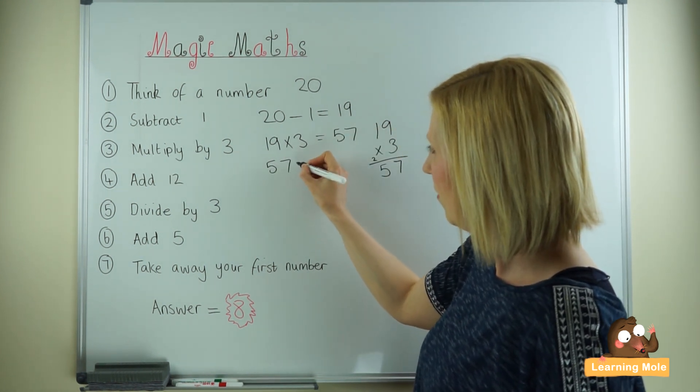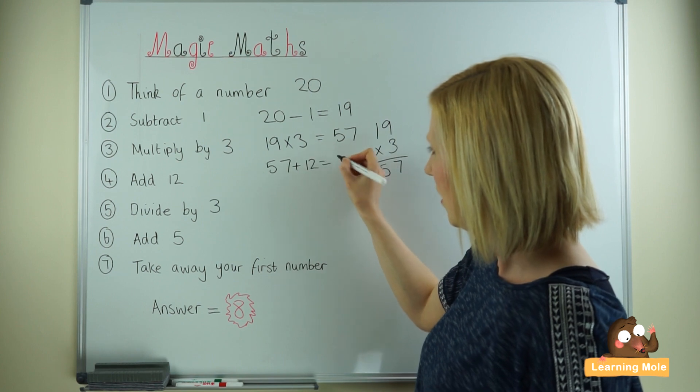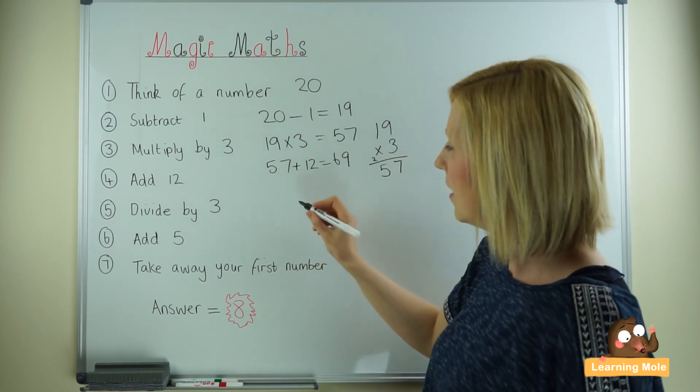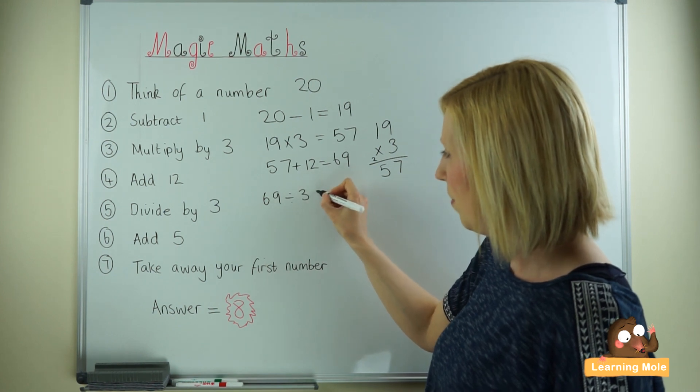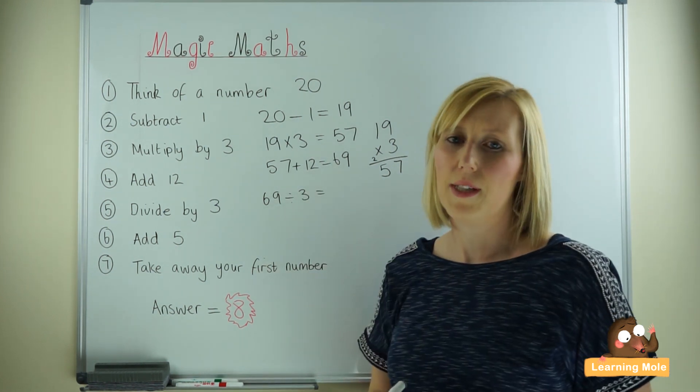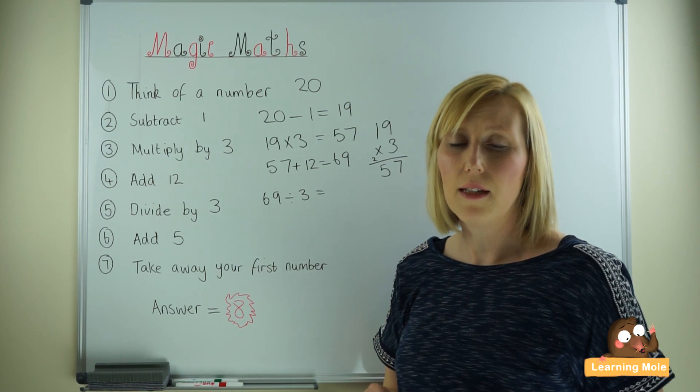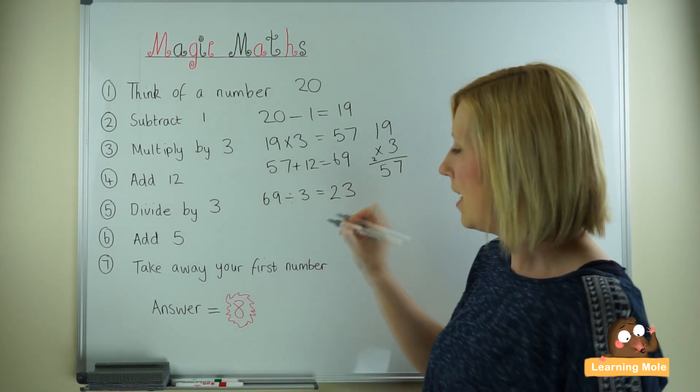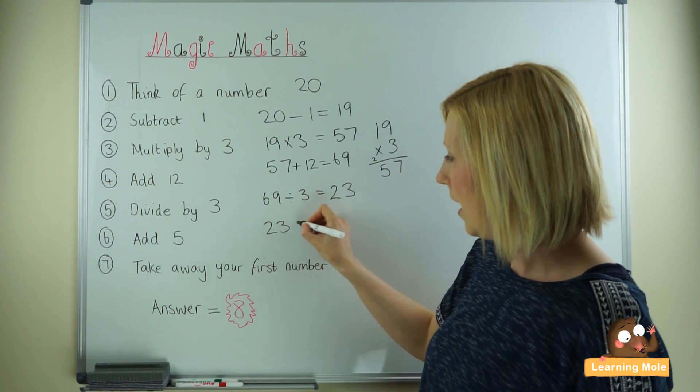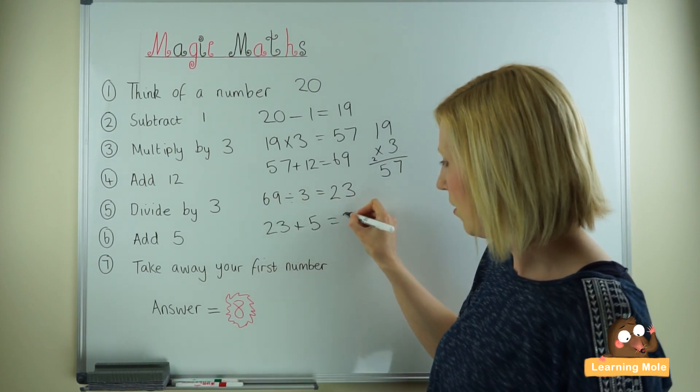57 add 12. 57 add 12 is 69. Dividing 69 by 3. And your child should be able to do that because they know what 60 divided by 3 is and what 9 divided by 3 is. So they should be able to come to the conclusion: 23. 23 and 5 which is 28.